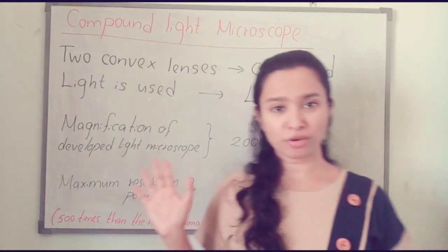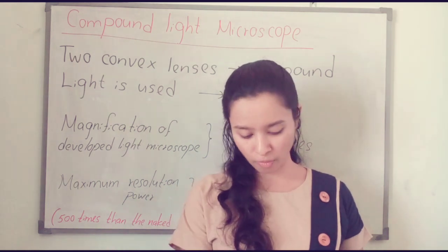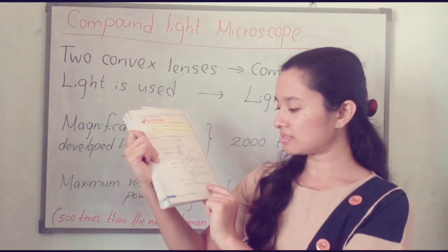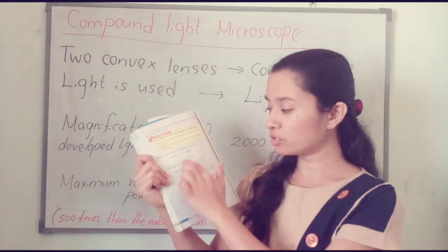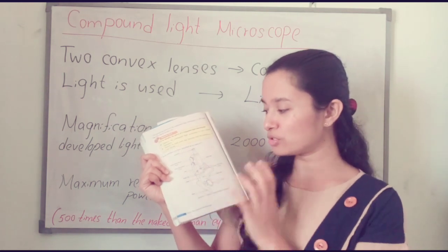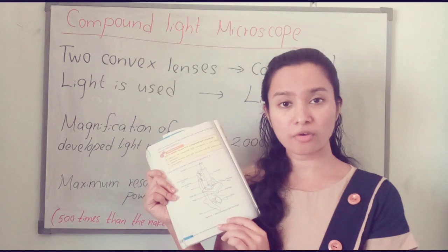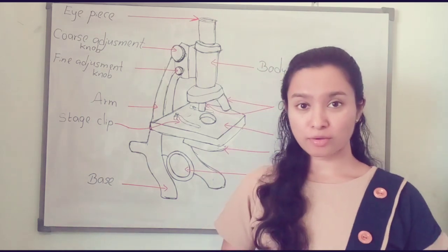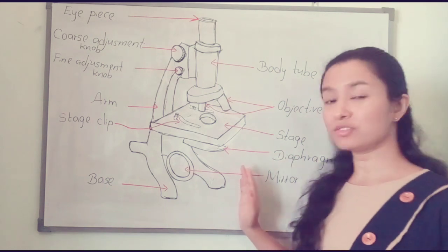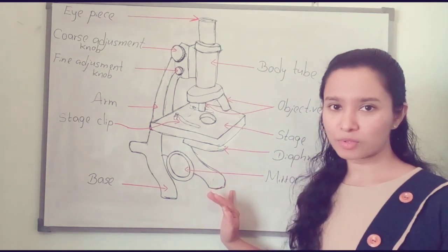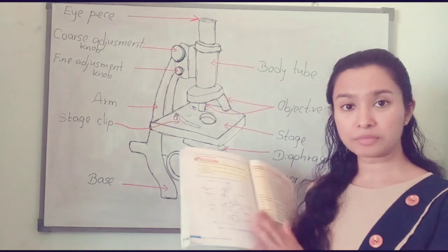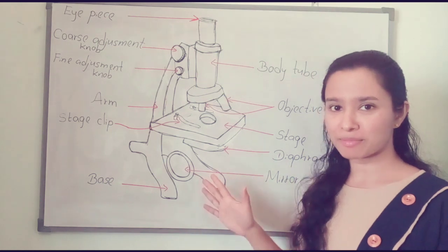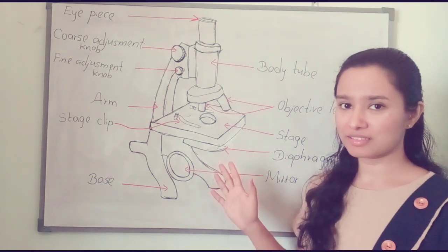Now you should know the parts of the compound microscope. Turn to page number 142. Here you can see a picture of the compound microscope. You should know how to draw it, and also you should know the names of all the parts. You have to draw this light microscope in your writing book, or you can take a printout. You should remember all these parts.